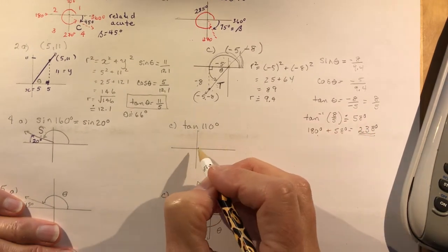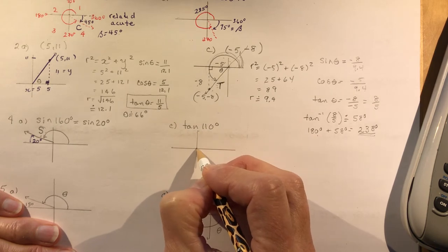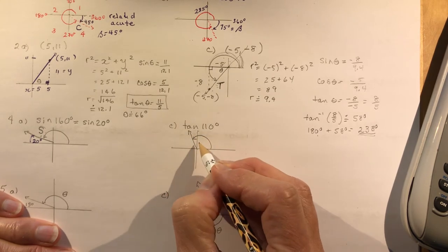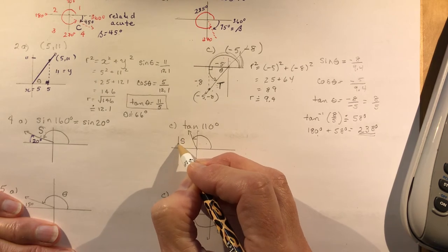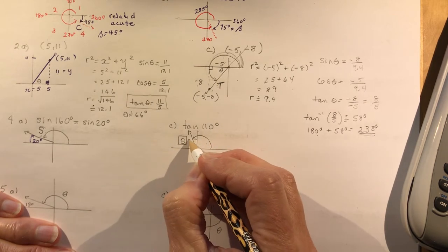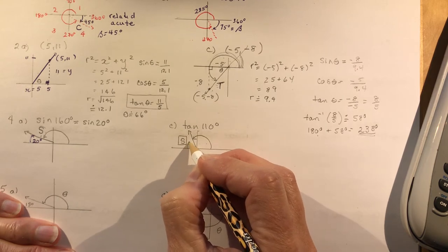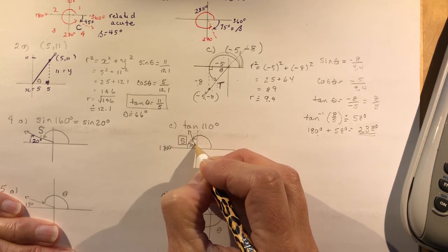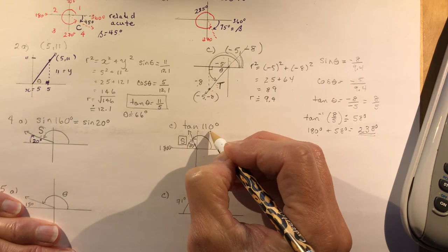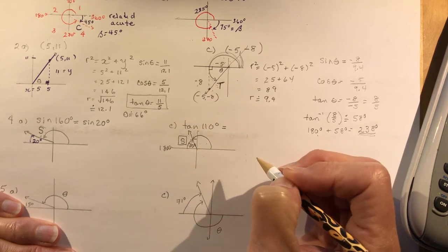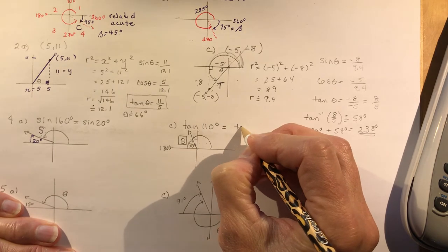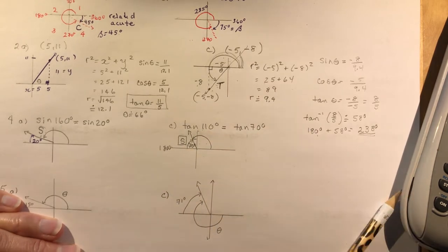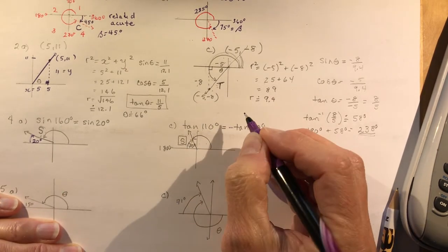Now tan of 110°. This is 90, so I want 20 more degrees from this axis — I'm here in quadrant two. Using CAST, only sine is positive here. The related acute angle: how far from here to here? If this is 180, this has to be 70 degrees. So tan of 110° = negative tan of 70°, because tan of 70° is positive and I want this to be negative.